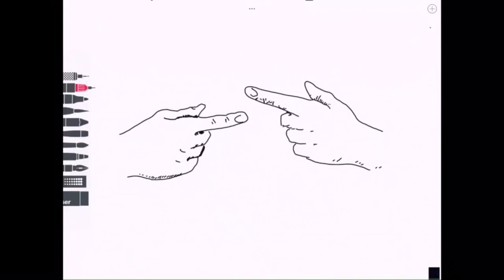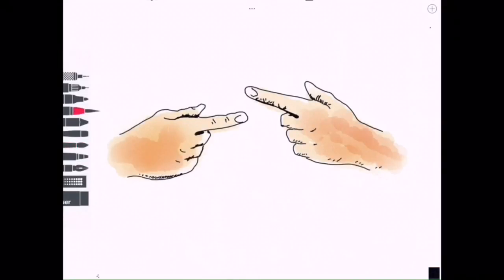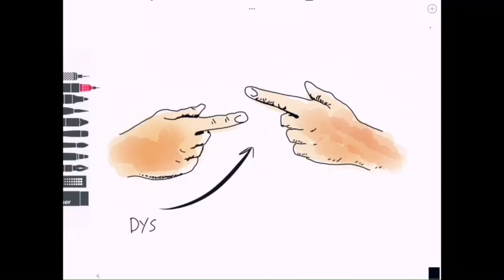Often associated with the tremor is something known as dysmetria. This is an inability to judge distances correctly and this often manifests itself as undershooting or overshooting target objects.